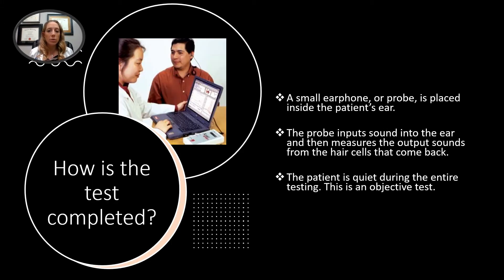So how is the test completed? You put a small earphone or probe into the patient's ear, and the probe inputs sound into the ear. There are different sounds — just little high-pitched beeps — and then the hair cells actually have a sound that sends the output back. The patient is very quiet during this entire testing, so it is an objective test. The ear does all the work; you just have to sit there.